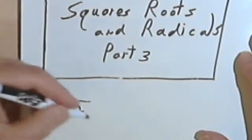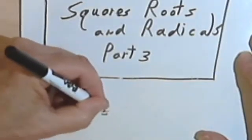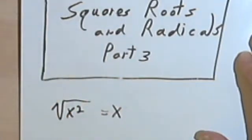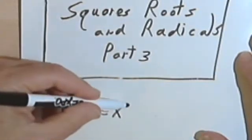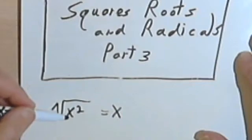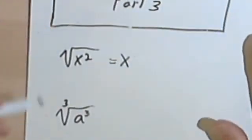So the square root of x squared is just x, because x squared is x squared.